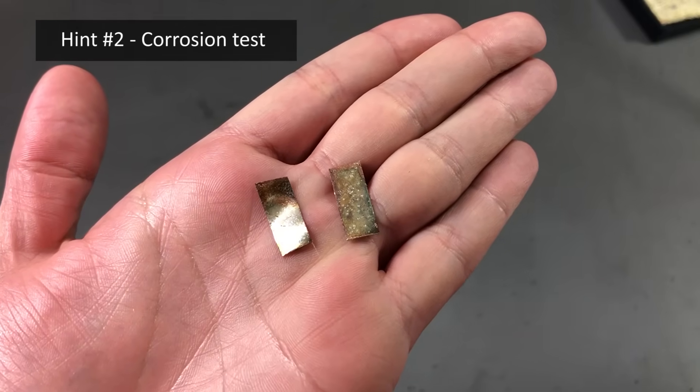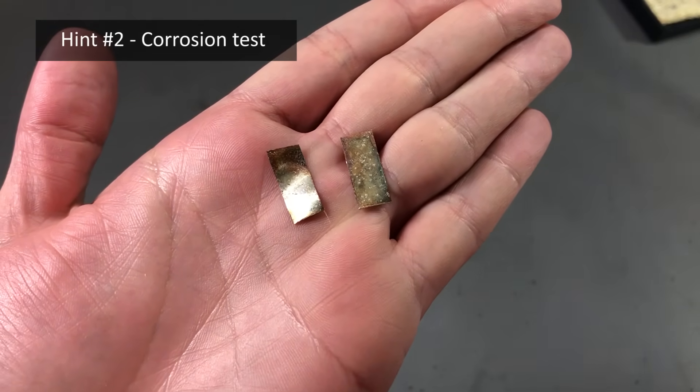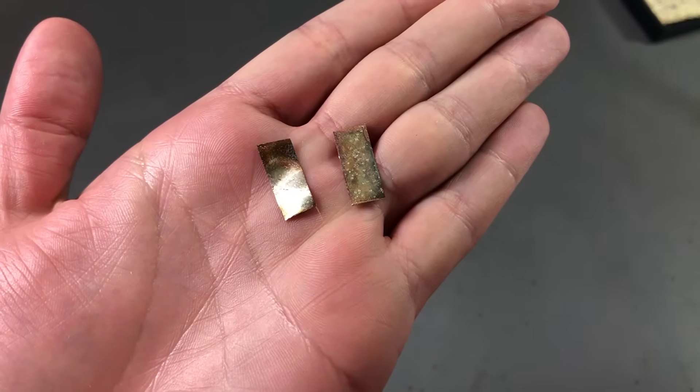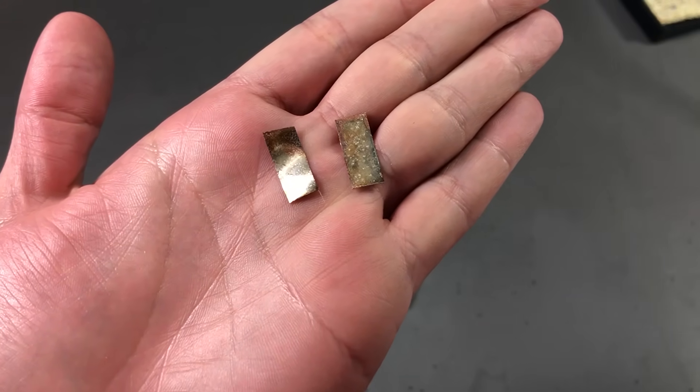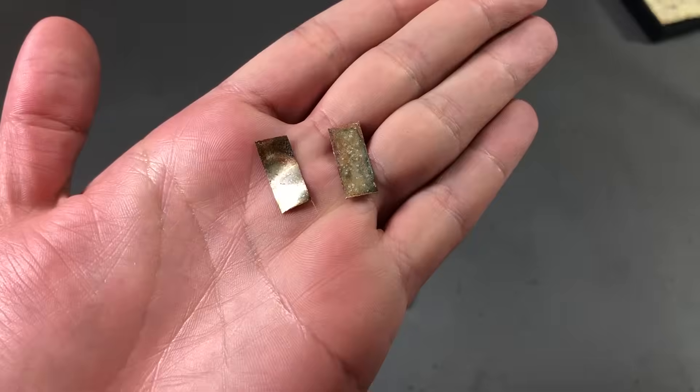Next you can do a corrosion test. Start by scratching the surface of the strip with some sandpaper or with a Dremel tool. This is to go through the nickel coating and expose the steel beneath if there is any.